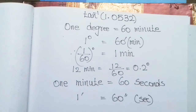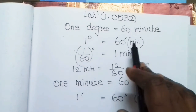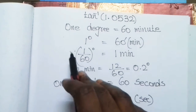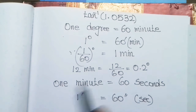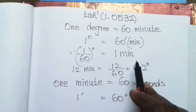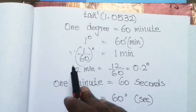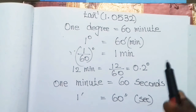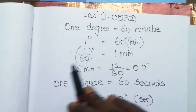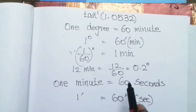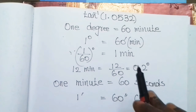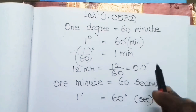1 degree means converting minutes to degrees: 1 minute is equal to 1 divided by 60 degrees. For example, 12 minutes means 12 into 1/60, which is equal to 0.2 degrees.